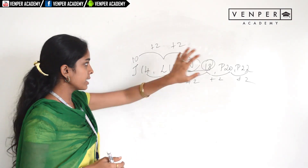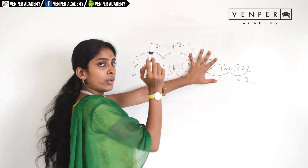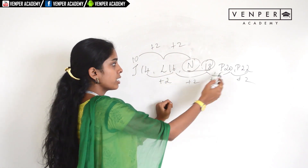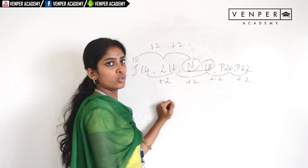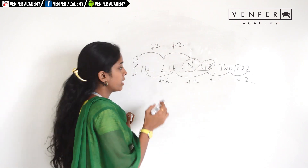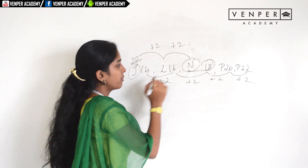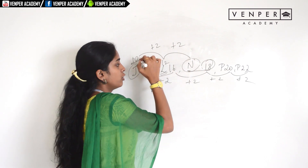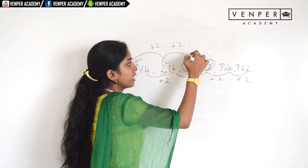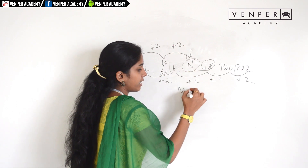Question twenty-three (series completion): the series follows a +2 pattern — 14+2=16, 16+2=18, and so on. J is the tenth letter, L is the twelfth, so the next letter (plus two) is the fourteenth letter, which is N. The next number in the series is 18. So the answer is L18.